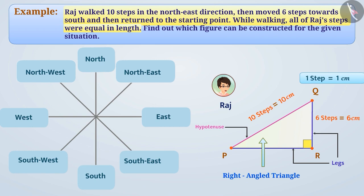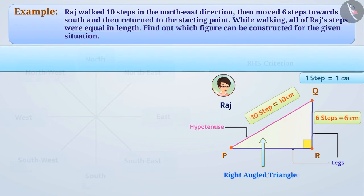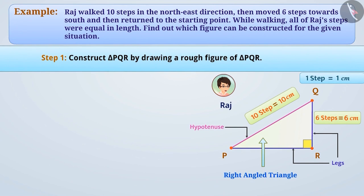Since we know the measurement of the hypotenuse and one side of the right-angled triangle, we can construct a unique triangle using the RHS criterion. So let us construct right-angled triangle PQR. Step 1: We have already drawn a rough figure of triangle PQR. Keeping this in view, we will construct triangle PQR.